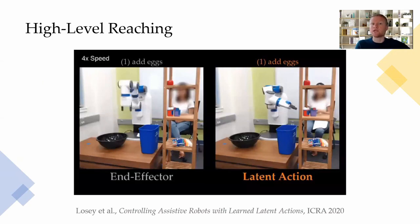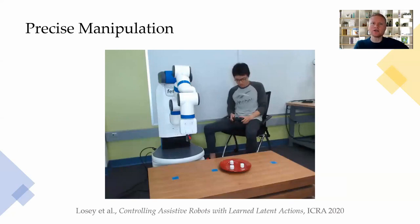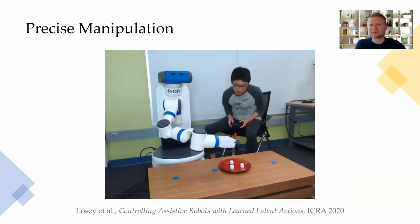In our prior work, we addressed the first challenge. We learned latent actions that enable users to intuitively guide assistive robots towards their high-level goals. Hong here is using our algorithm, which makes high-level reaching much smoother than directly teleoperating the end effector.